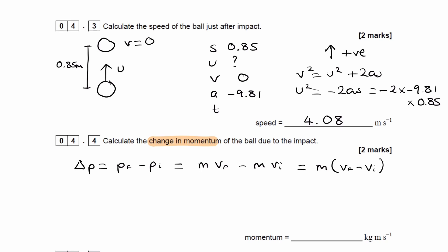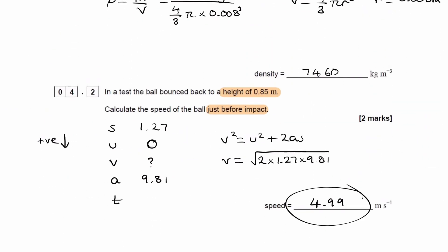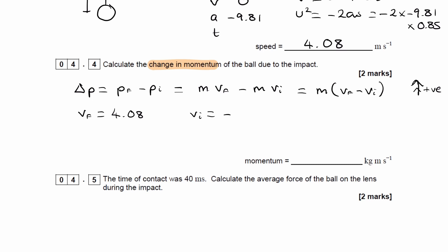Now for these kinds of questions, a very common mistake is to forget that velocity or momentum is a vector, or velocity and momentum are vectors. So we need to consider the signs of Vf and Vi. So again, whenever we're considering vectors, we have to define a positive direction. I'll just say upwards is positive for no reason. Just we have to pick a direction and stick with it. So the final velocity will be the velocity after it hits the lens. That was the 4.08. Positive because it's going upwards. And then the initial velocity is what we had down here, 4.99. That's the velocity just before it hits the lens. That will be negative because it's going downwards.